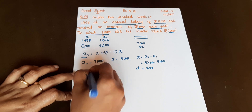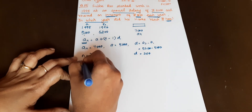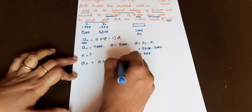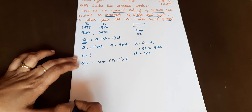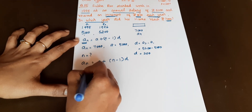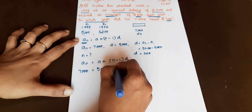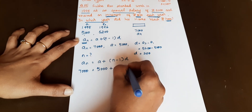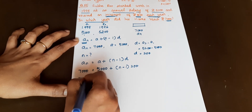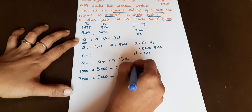So now we will apply the formula. AN is equal to A plus (N minus 1) times D. AN is equal to 5,000 plus (N minus 1) times 200. Now, 7,000 is equal to 5,000 plus (N minus 1) times 200.